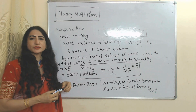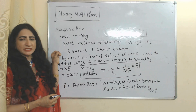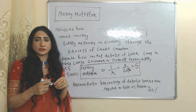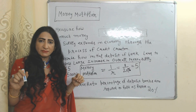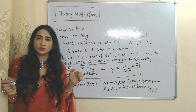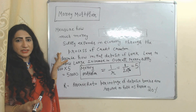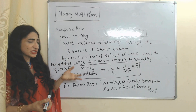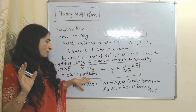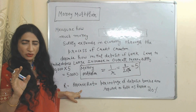The next most important determinant is the money multiplier. The money multiplier measures how much money supply expands in the economy through the process of credit creation by banks. We can also say that the money multiplier measures how an initial deposit in banks leads to a large increase in overall money supply.